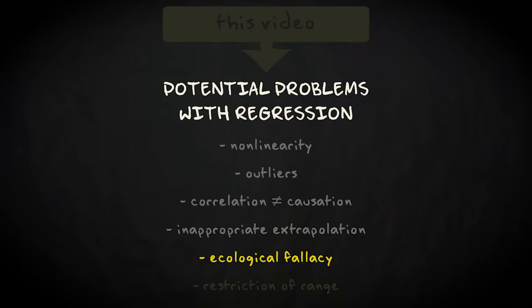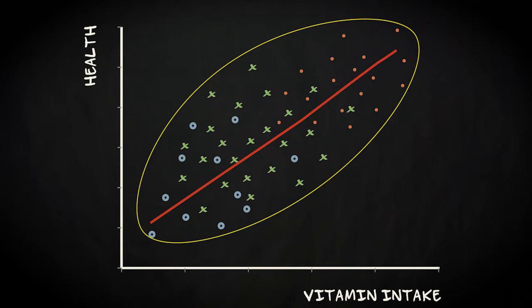The ecological fallacy refers to drawing inappropriate conclusions about individual cases when correlation or regression is based on aggregates of these cases. For example, if we have a lot of data on the relation between vitamin intake and health from different countries, we could aggregate over countries.